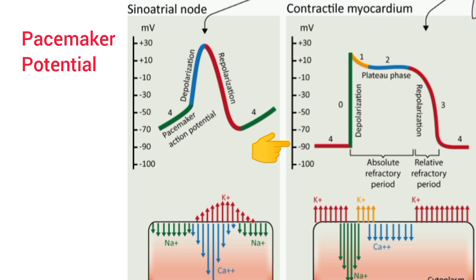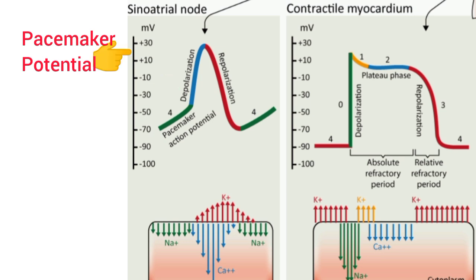For the action potential of the SA node, depolarization starts very slowly and the threshold level of minus 40 mV is reached very slowly. After the threshold level, rapid depolarization occurs up to plus 5 mV. It is followed by rapid repolarization. Once again, the resting membrane potential becomes unstable and reaches the threshold level slowly.